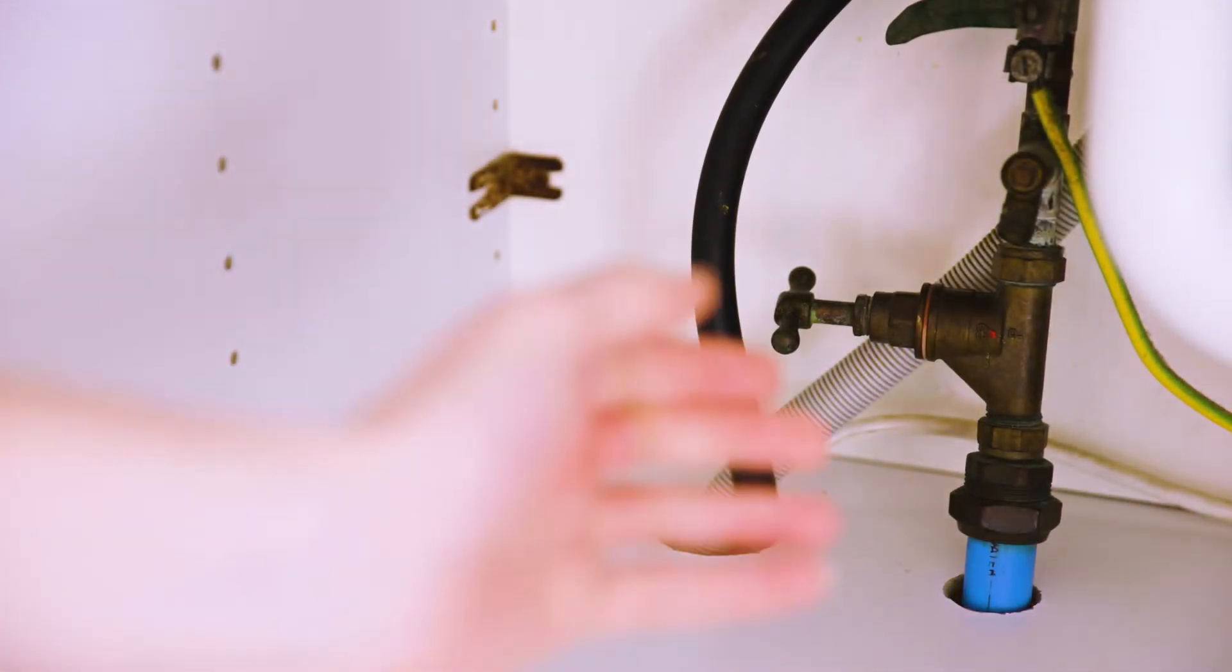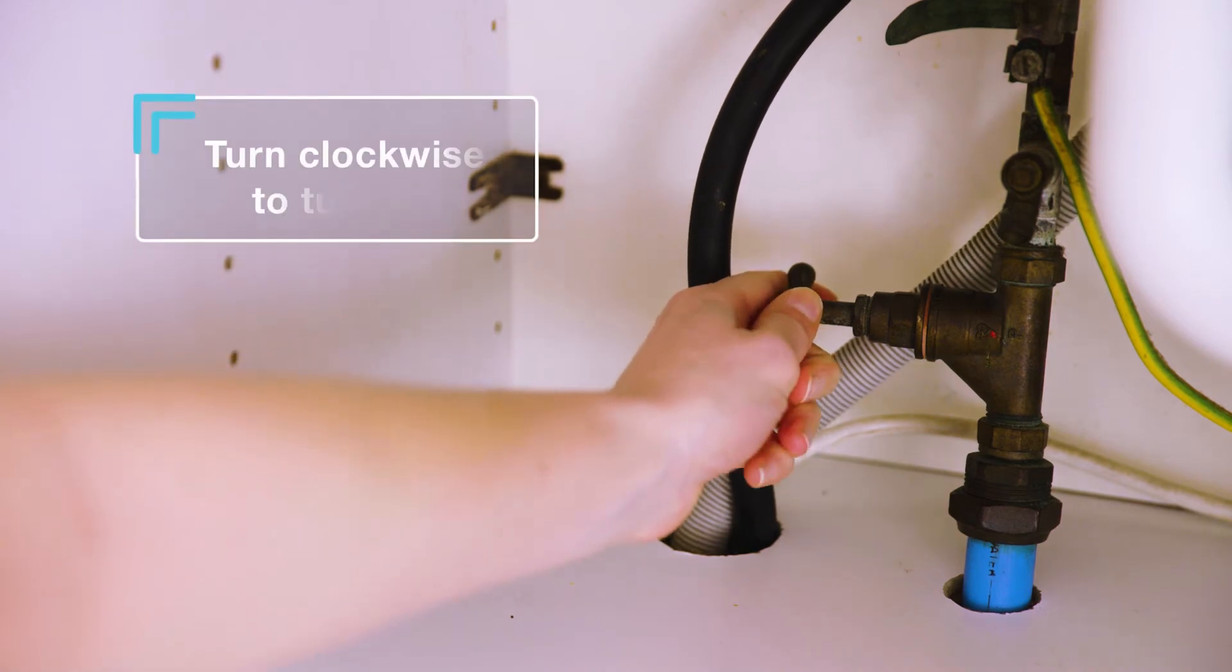Once you've located your stopcock, you can use it to turn off the water supply by turning the valve clockwise.